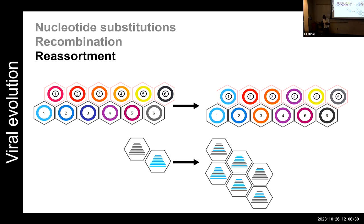Segmented viruses are like viruses with multiple chromosomes, each encoding one gene. Influenza, for example, has eight segments — eight linear RNA molecules, each encoding one gene, all encapsulated in one particle. With co-infection, reassortment can occur, which is why we need new influenza vaccines every year: reassortants emerge in reservoir species.